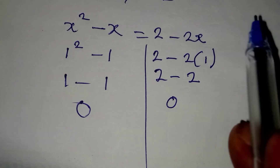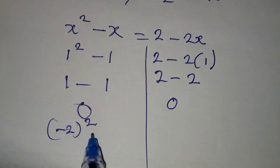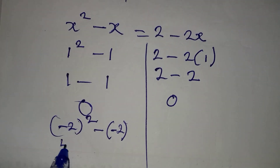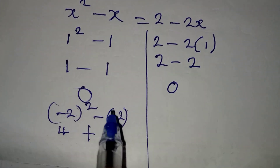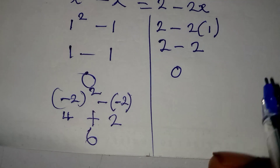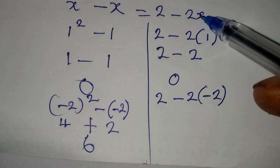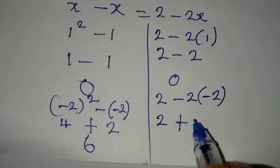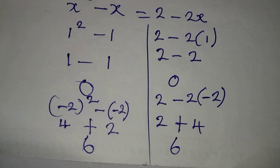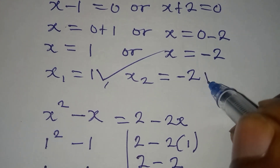Let's go back to x2, where we have minus 2. Here we have minus 2 squared, then in place of minus x, we have minus (minus 2). Minus 2 squared gives us 4, then 4 plus 2 — because minus minus gives plus — equals 6 on the left-hand side. On the right-hand side, we have 2 minus 2 times (minus 2), which means 2 plus 4, giving us 6 on the right-hand side as well. This confirms that x2, which equals minus 2, satisfies the equation.